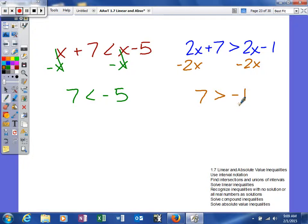If it's true, then your answer is all real numbers. If it's not true, then your answer would be no solution. Well, 7 is not less than negative 5. So therefore, the answer for this one would be no solution.